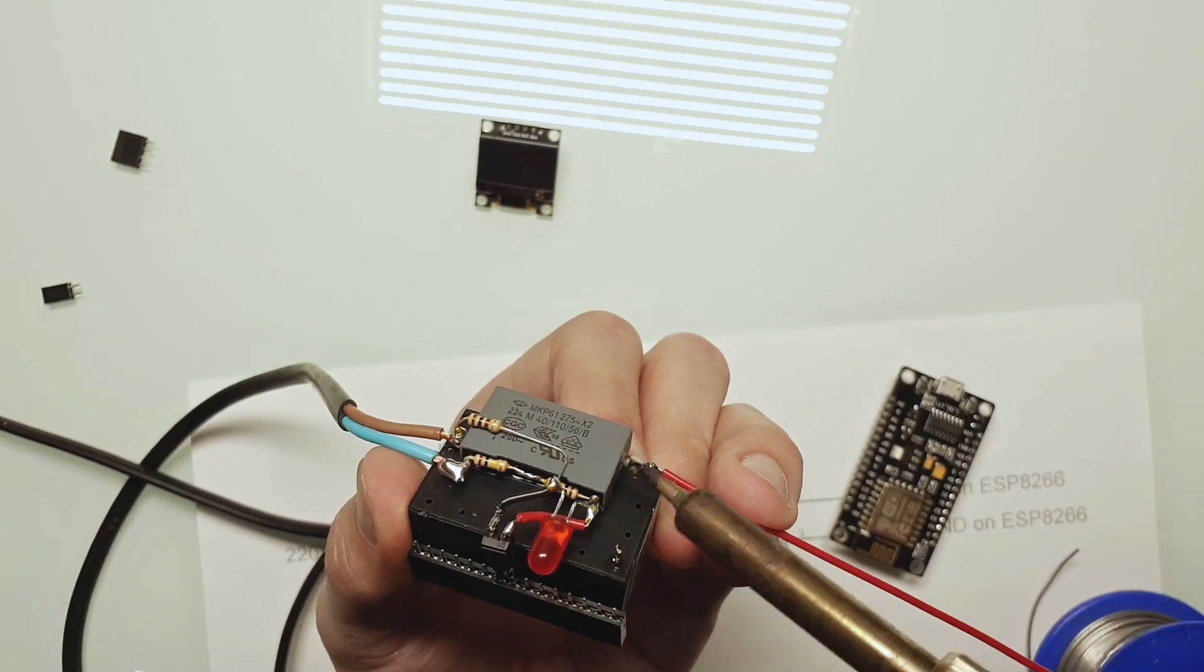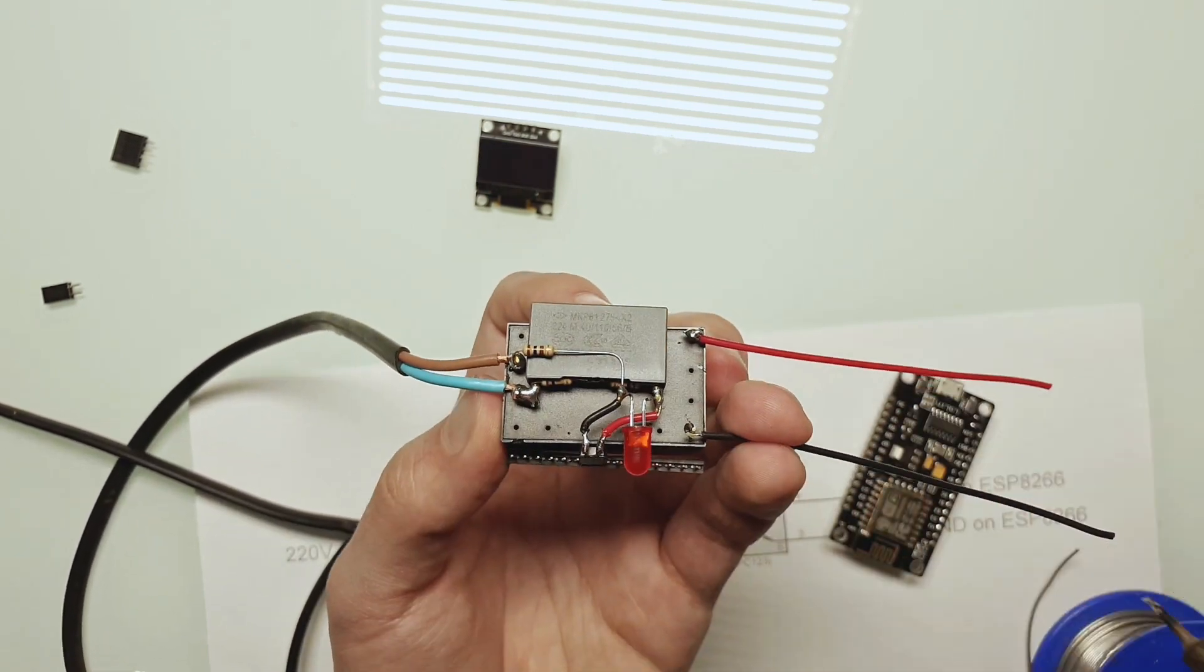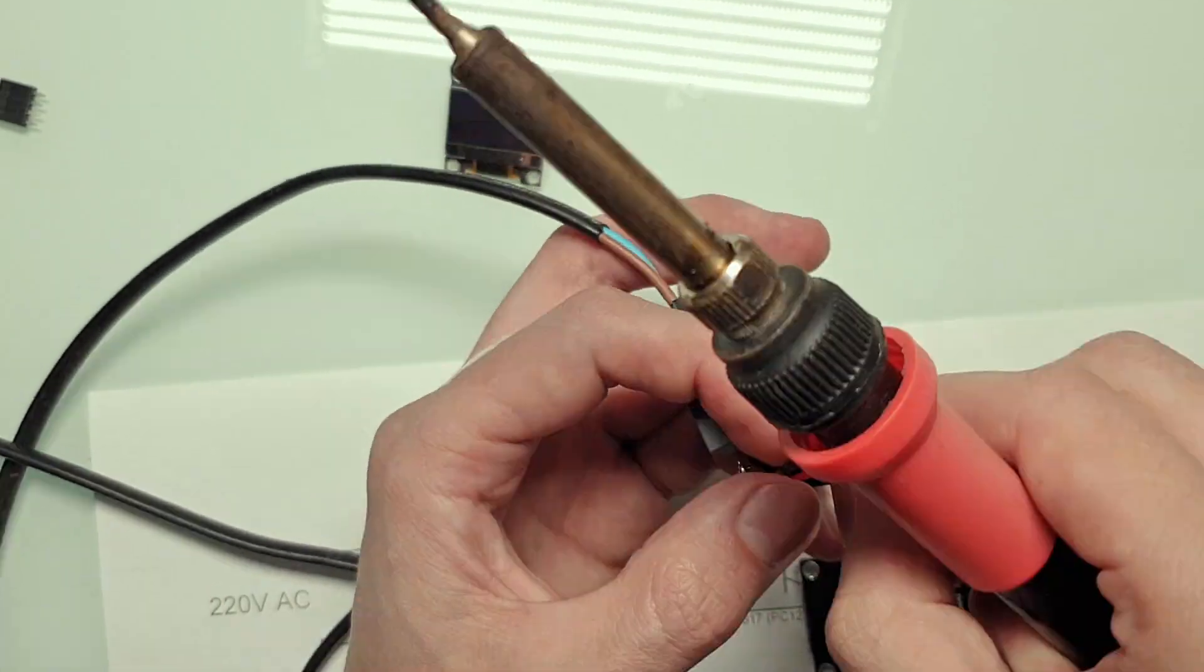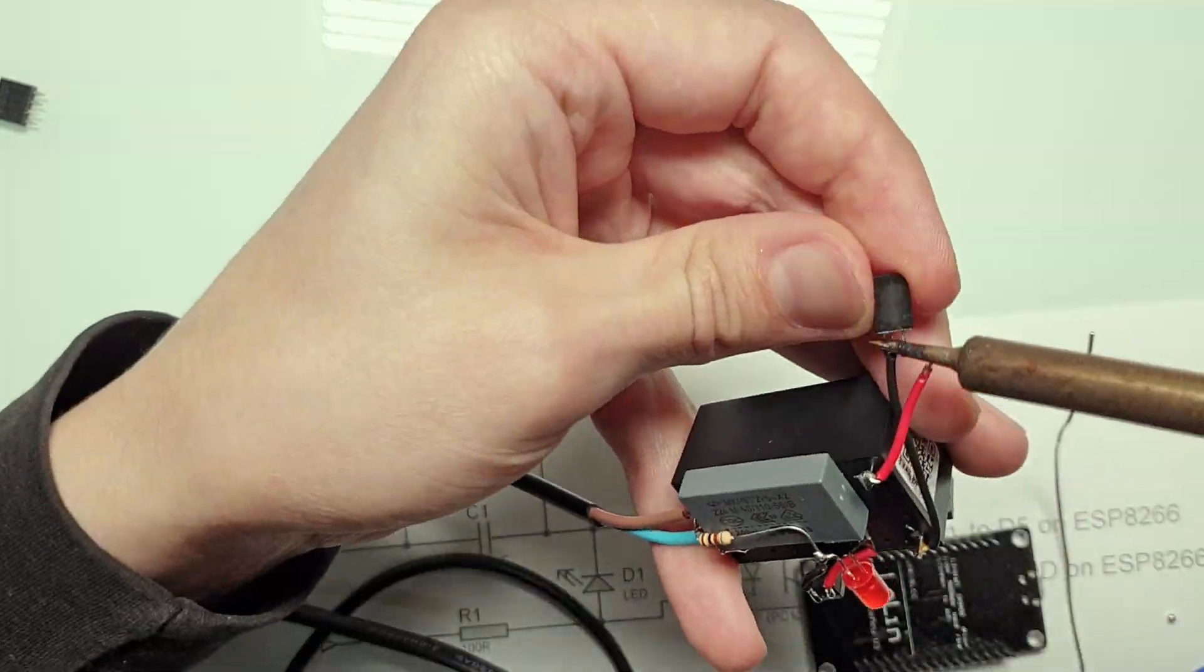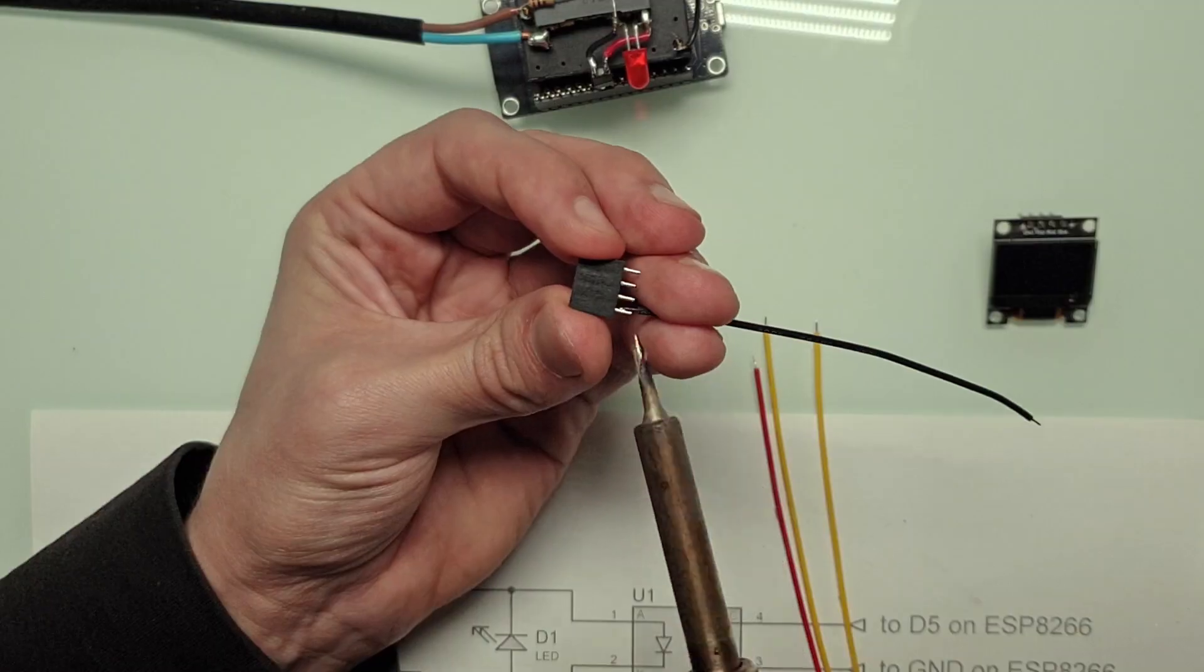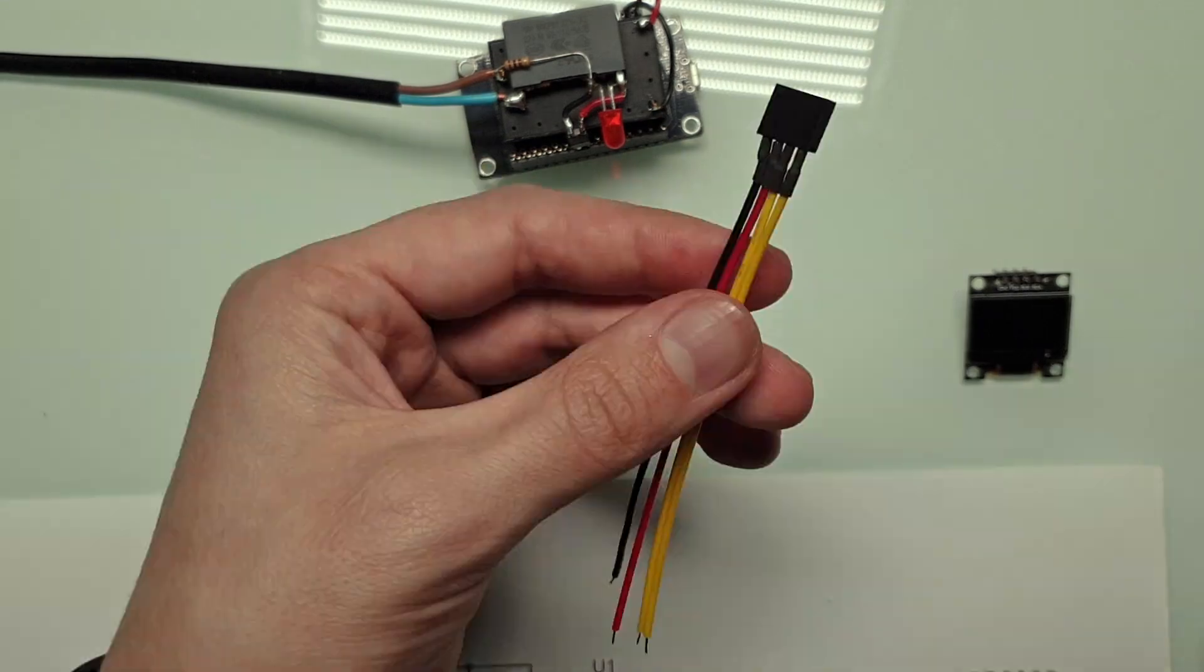Now let's solder the power connector through which ESP8266 will receive its power. First, let's solder wires to the power supply. And now let's solder the power connector to the wires. Now it's time for the display. We just need four wires: two wires for the power and two for the I2C bus.